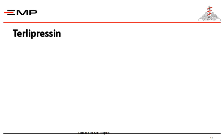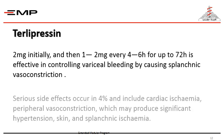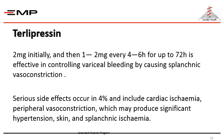We commence a third-generation cephalosporin or ciprofloxacin and continue for five days. Terlipressin is an analogue of vasopressin that is effective in controlling variceal bleeding by causing splanchnic vasoconstriction. Two milligrams are given initially, then one to two milligrams every four to six hours for up to 72 hours. Serious side effects occur in 4% of cases, including cardiac ischemia, peripheral vasoconstriction which may produce significant hypertension, and skin and splanchnic ischemia.